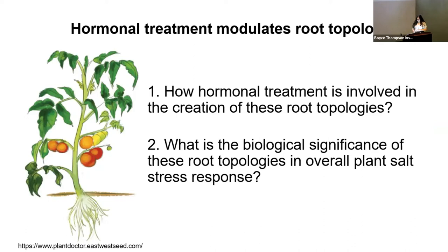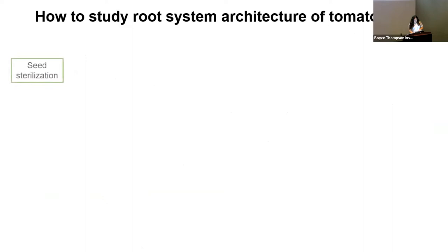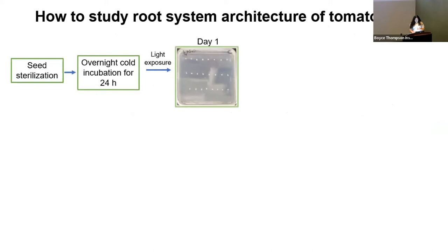But how do we study root system architecture? First, we take the seeds and sterilize them with 50% bleach for 10 minutes. Then we proceed to incubate them overnight in cold and expose them to light. Once we have these seeds, we place them in a controlled place, as we can see in day one.